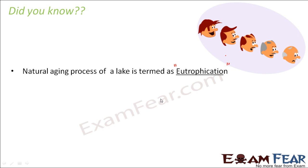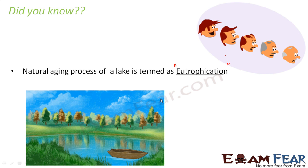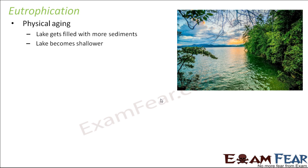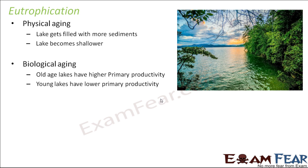So now we will spend some time understanding what is eutrophication and how exactly it takes place. Whenever you see a lake, you might wonder whether it is a young lake or an old lake. Now there can be two types of aging associated with a lake: it can be physical aging or it can be biological aging.